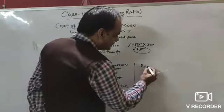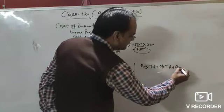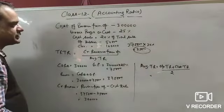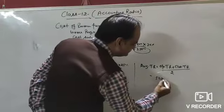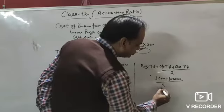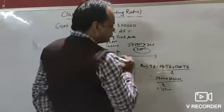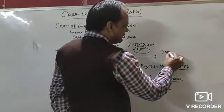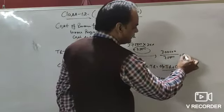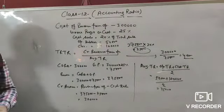Average trade receivable = (opening ₹50,000 + closing ₹1,00,000) / 2 = ₹75,000. Putting values in formula: credit revenue from operation ₹3,00,000 divided by average trade receivable ₹75,000 = 4 times. Trade receivable turnover ratio is 4 times.